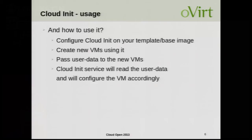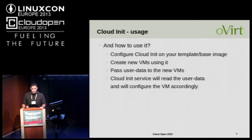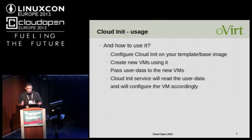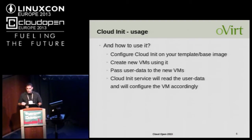How to use it? This is very easy. First, you need a base image or template with a Linux distribution installed — many distributions are supported by cloud-init: Fedora, Ubuntu, RHEL, CentOS and so on. Once you have this, you only have to install cloud-init. Then just create a VM from this template, start it with the specific user data and configuration you want to run, and cloud-init will read and execute all the configuration according to the specific distribution.